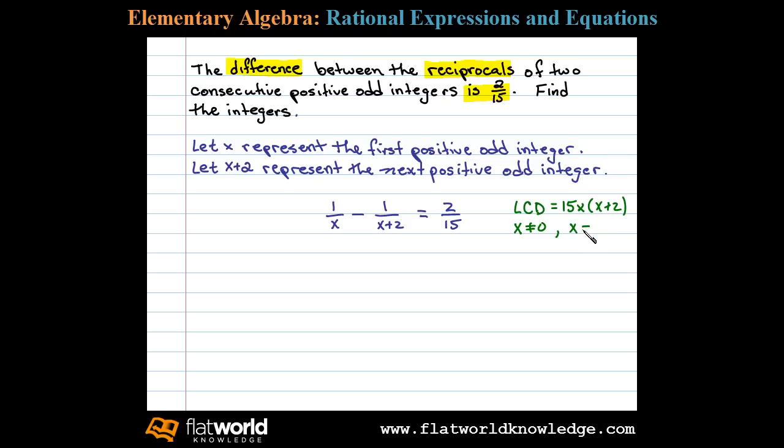Now we solve this rational equation by multiplying both sides by the LCD, which is equivalent to multiplying each term by the LCD. Doing this, we can see X will cancel, leaving us with 15 times X plus 2. Then X plus 2 cancels, giving us minus 15X. The 15 cancels, so this equals 2X times X plus 2.